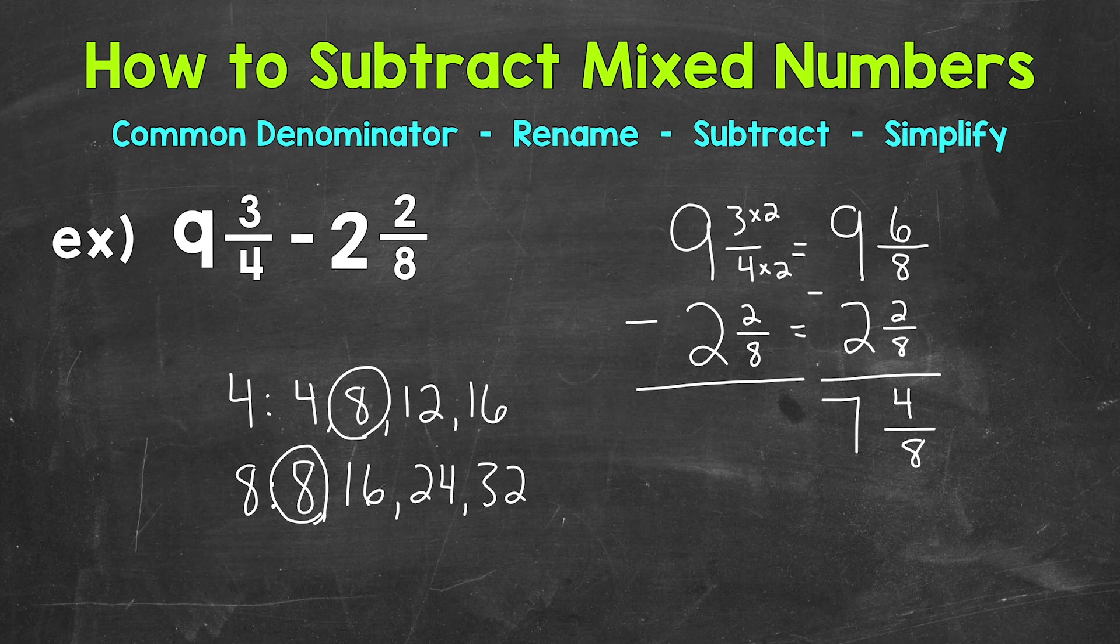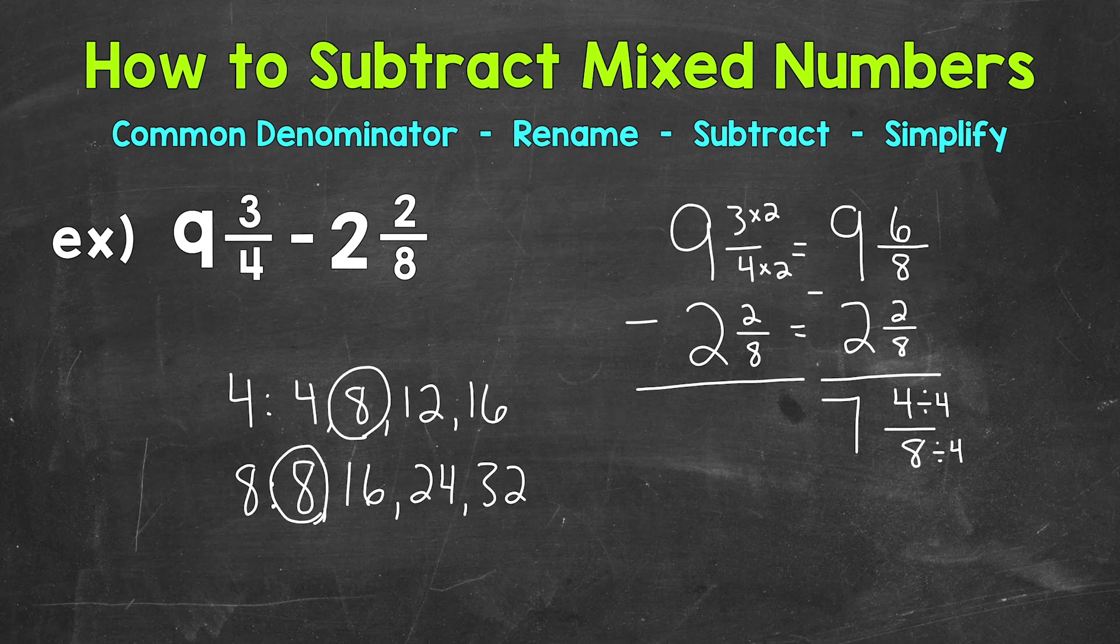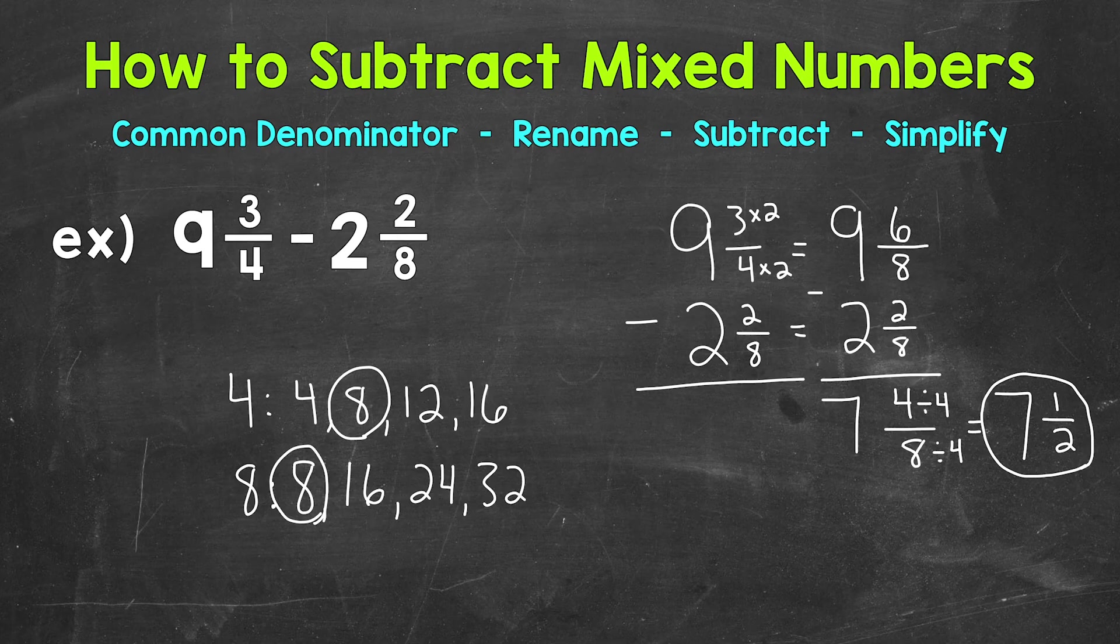So we get 7 and 4 eighths. Always look to see if you can simplify the fractional part of a mixed number. We can. 4 eighths can be simplified. We have a greatest common factor of 4. So let's divide both of these by 4. And we get 7. 4 divided by 4 is 1. 8 divided by 4 is 2. So we get a simplified answer of 7 and a half.